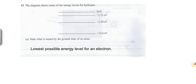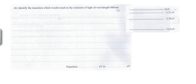This is question number 13. The diagram shows some of the energy levels of hydrogen - these are energy levels. State what is meant by the ground state of an atom. Ground state is the lowest possible energy that an electron can have in an atom. So we can say that the lowest possible energy level for an electron or for an atom is the ground state. Identify the transition which would result in the emission of light of wavelength 660 nanometers. For emission of light, what happens? When a photon jumps from some higher level to a lower level, it emits a photon of some energy.